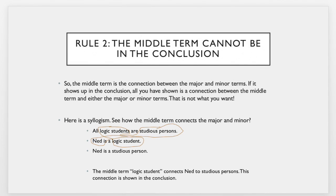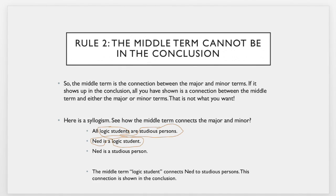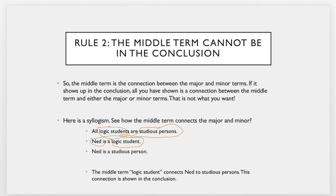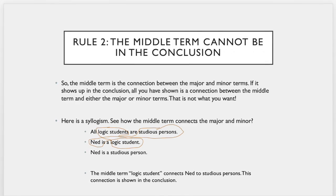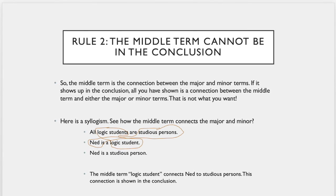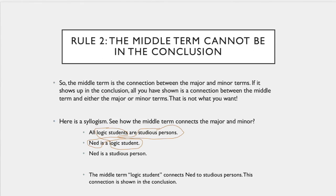So the middle term is the connection between the minor and major terms, and if it shows up in the conclusion, all you have shown is a connection between the middle term and either the minor or major term. That is not what you want.